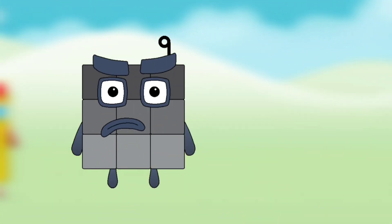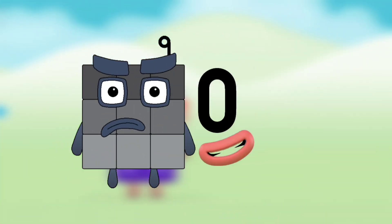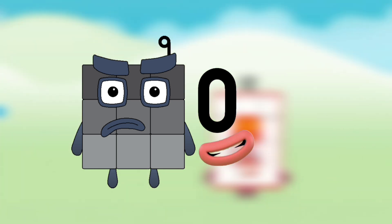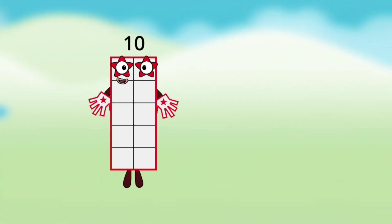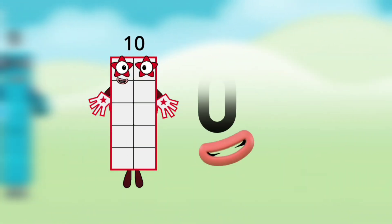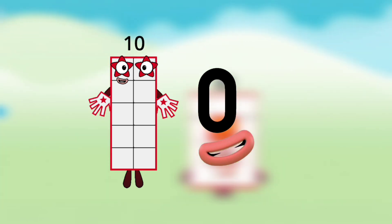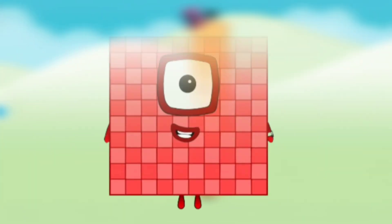Number block 9 with number block 0 — that means number block 90. Number blocks 10 with number block 0 — that means number blocks 100.